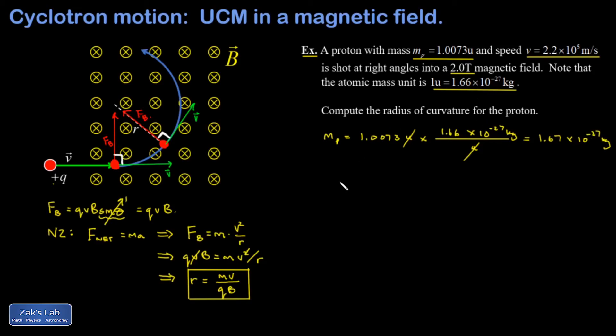It looks like everything else is ready to go into our radius of curvature formula. So I have MV over QB. I need to remember the elementary charge on a proton real quick. That's 1.60 times 10 to the negative 19 coulombs. And then finally, my magnetic field was 2.0 Tesla.